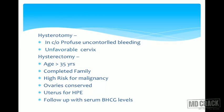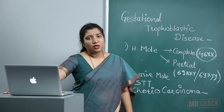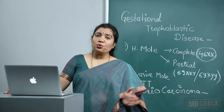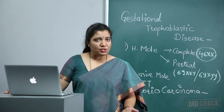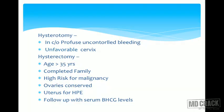Hysterectomy is another option for molar pregnancy, especially if the patient has completed her family or is at very high risk for malignancy. Indication includes age more than 35 years with completed family. The patient must be counselled about advantages and disadvantages. Ovaries must be conserved. The uterus is sent for histopathological examination. Follow-up with serum beta-HCG levels is still required after hysterectomy.